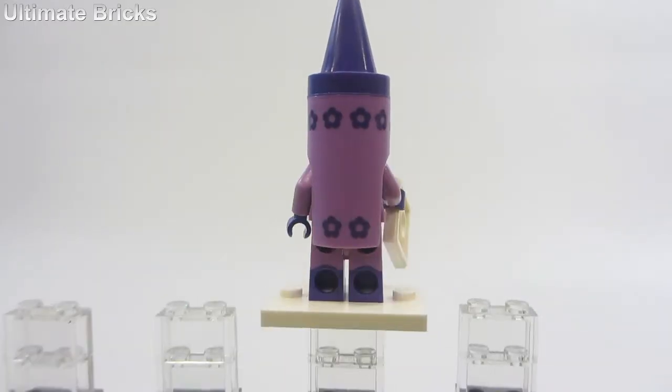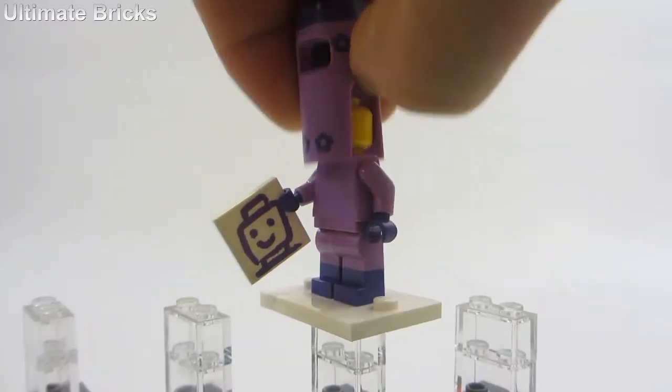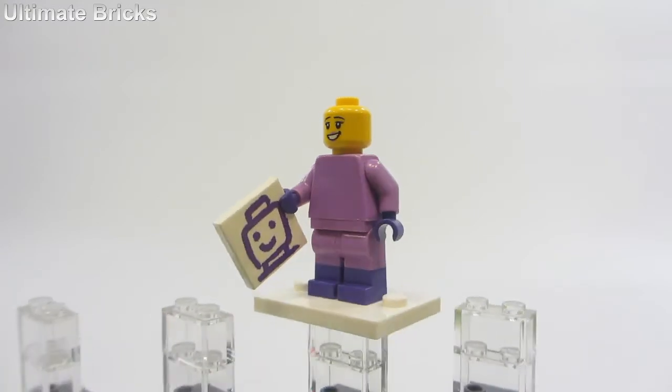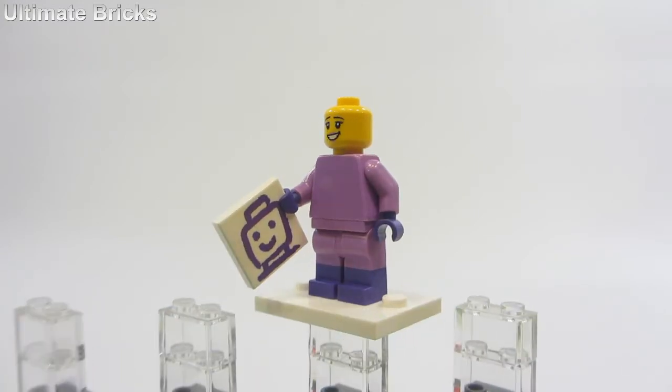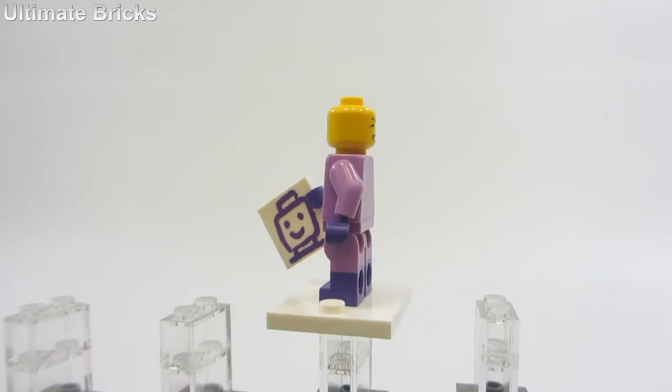Alright, so the crown lady is basically just a purple person with dual-molded legs, so lavender torso for the top of the legs, and then with the dark purple, regular purple, dual-molded for the bottom of the legs and the hands.